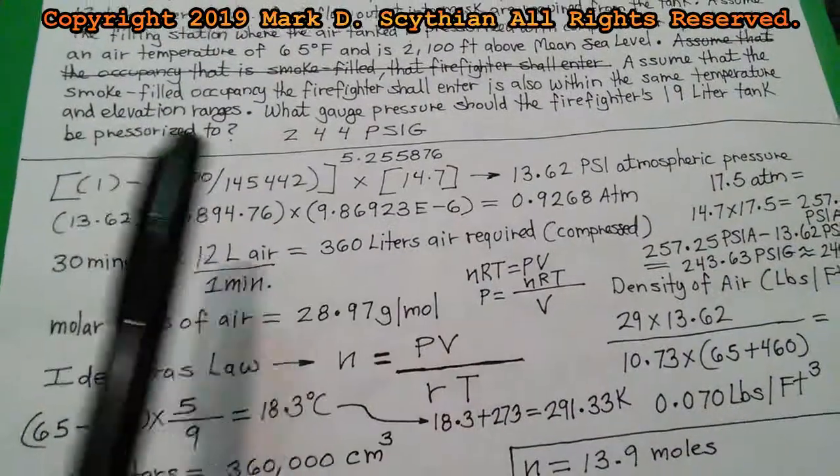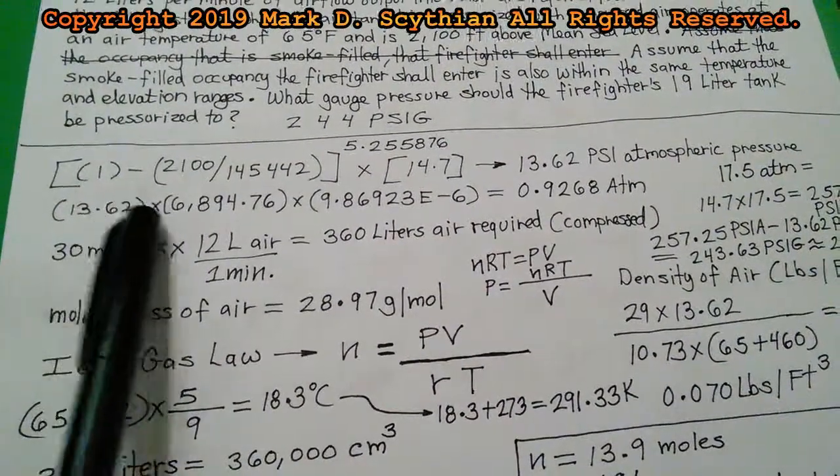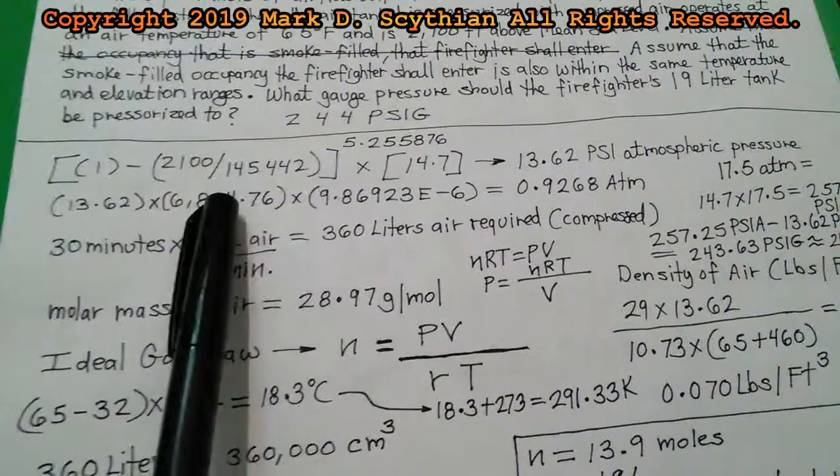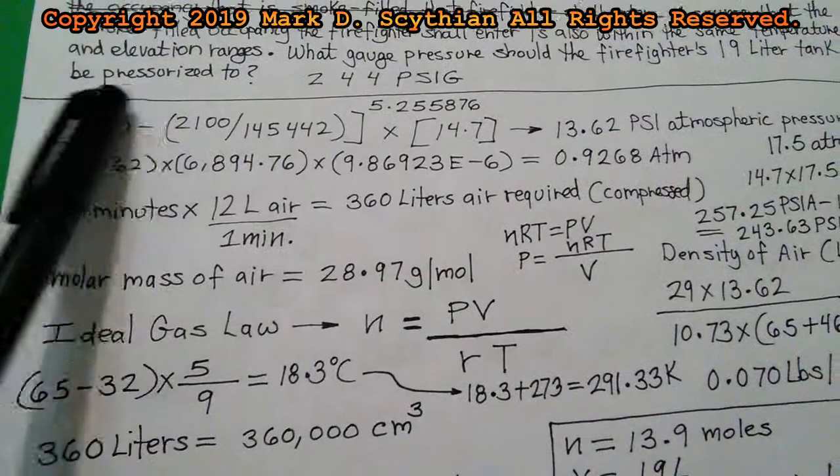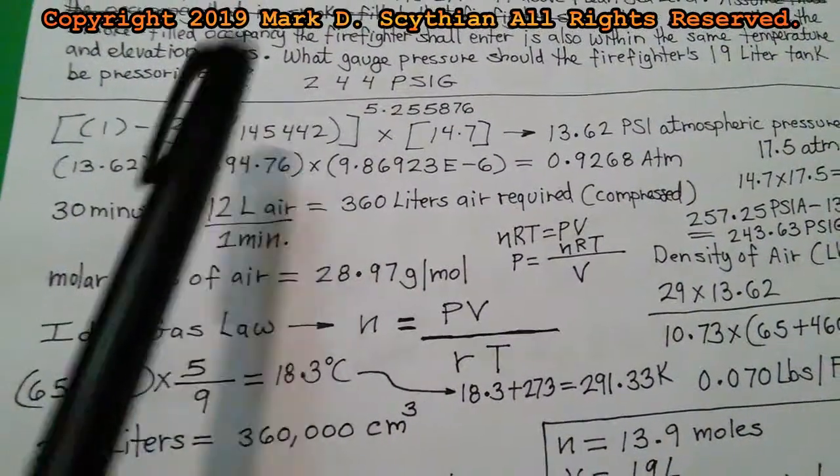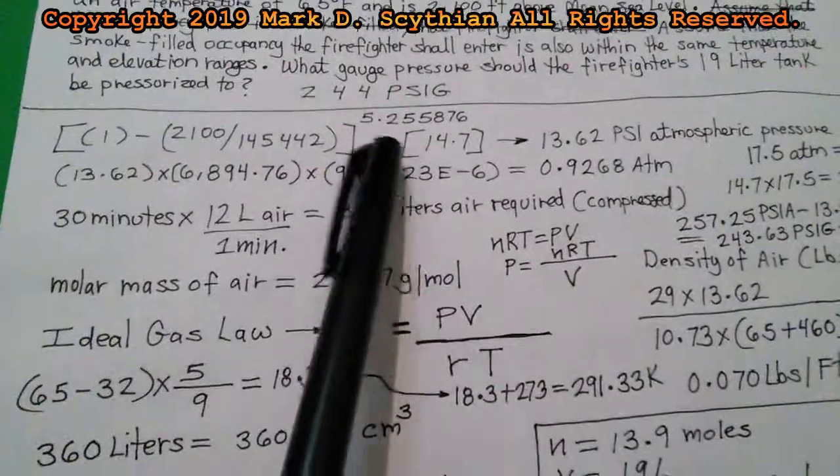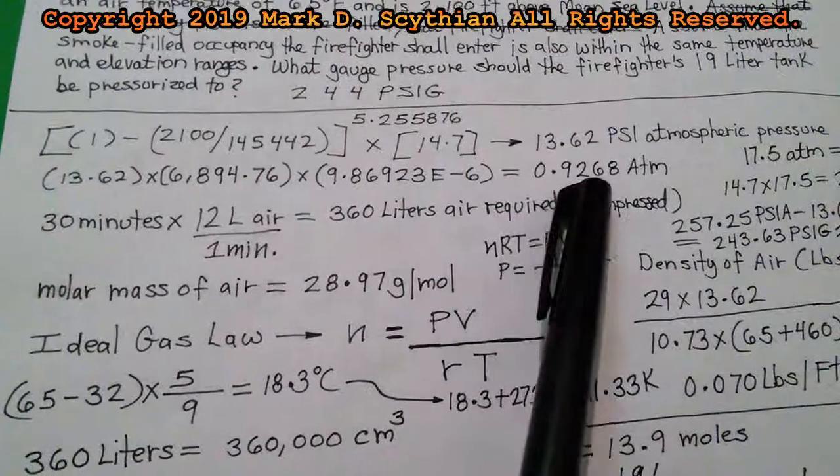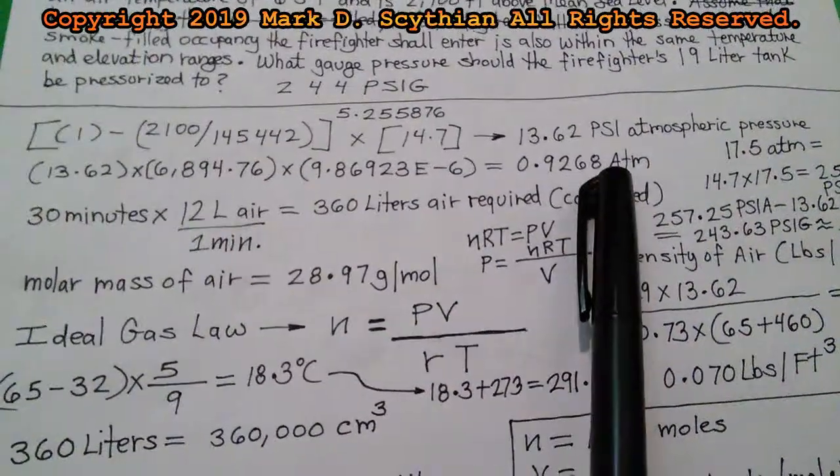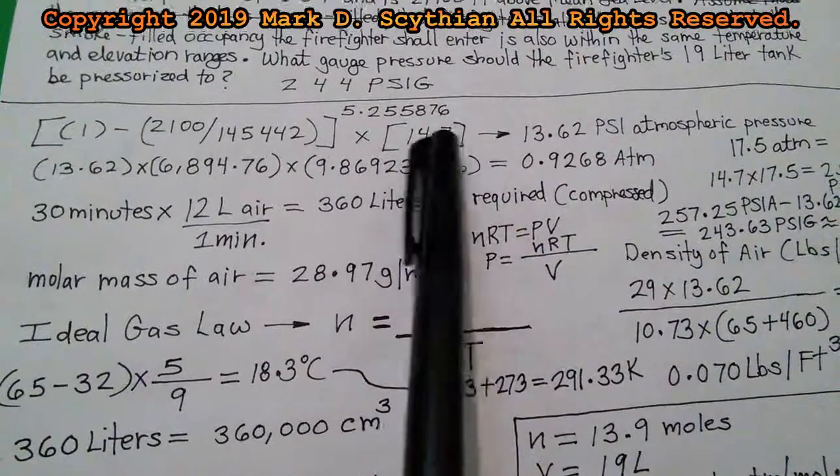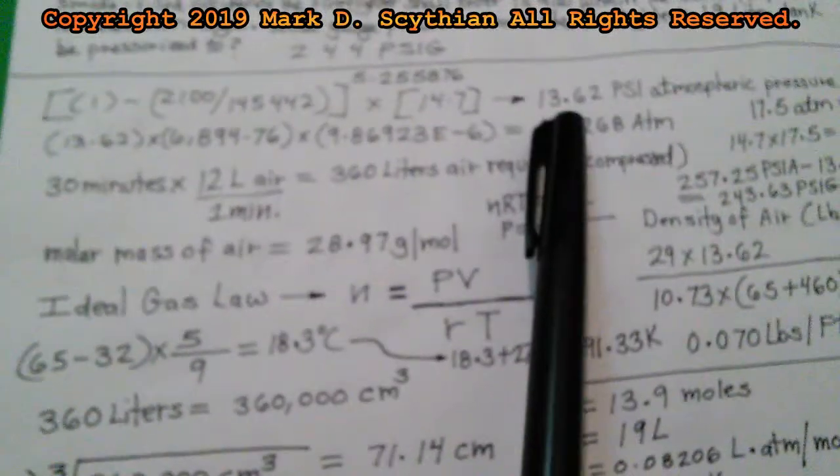13.62 psi of atmospheric pressure when at 2100 feet above mean sea level. If you want to check it by using the metric system, you can enter the psi value times the conversion to pascals times the conversion to ATMs. 2100 divided by 145442 minus 1 to the 5.255876 power, you also calculate 0.9268 ATMs. One multiplied times the standard atmospheric pressure, you'll get 13.62. That is accurate, that's been proven.